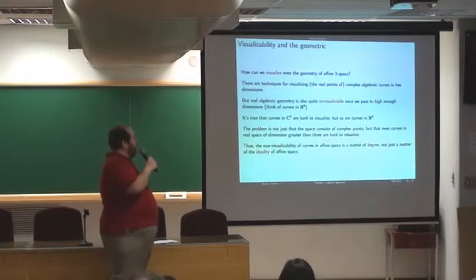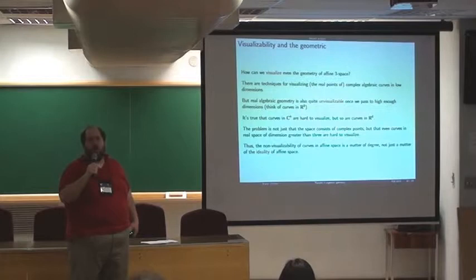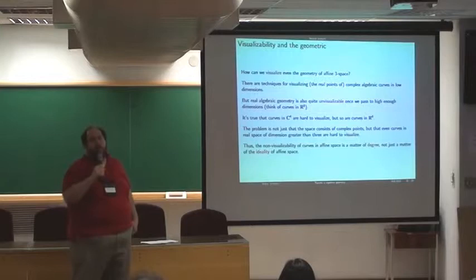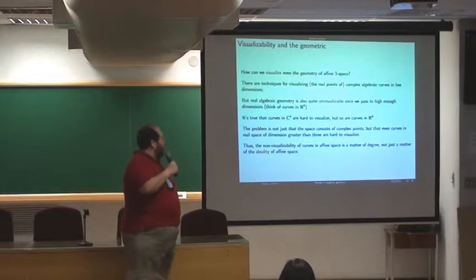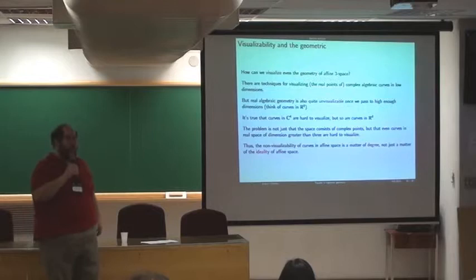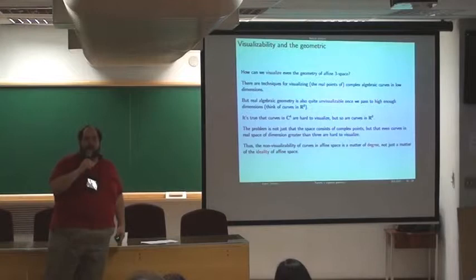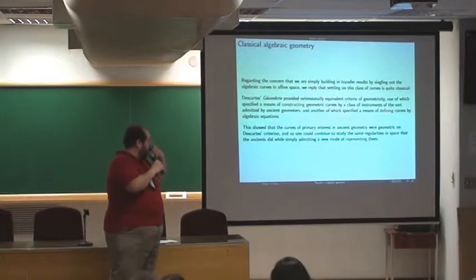Well, let me try to address both of those questions very briefly. In the first question about visualization, just notice that you get the same problem when you think about real algebraic geometry. It's a question of dimensionality. You want to say to me, how do you visualize a complex curve? I want to say to you, how do you visualize a curve in R8? Is that pretty easy to do? I have a hard time even at R3, but jack up the level to R8, and I have no hope at all. So the problem here, I want to say, is not just that somehow we're talking about complex space where these curves live. The problem is the problem of dimensionality. Just visualization is hard, period. And so I want to say that the non-visualizability of curves in affine space is a matter of degree, not a matter of the nature of the space that consists of ideal points.